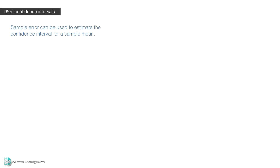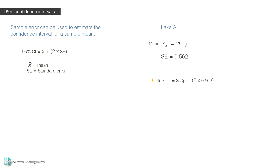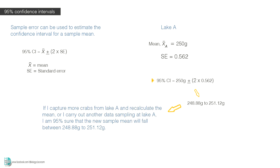The standard error can be used to estimate the confidence interval for a sample mean. You can assume this approximation by having the mean plus or minus 2 times the standard error. For lake A, the mean is 250g and the standard error is 0.562. The 95% confidence interval will be 250g plus or minus 2 times 0.562, giving you 248.88 to 251.12. This means if I capture more crabs from lake A and recalculate the mean, I am 95% sure that the new sample mean will fall between these two values.